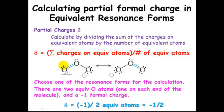Here are our two equivalent atoms — they're the two that we can draw the other resonance form for. So we have two equivalent atoms with a single minus one charge on one of the atoms. We're going to take this minus one charge, divide it by two equivalent atoms, and we get a partial formal charge of minus one-half. So each of these two oxygens has a partial formal charge of minus one-half.